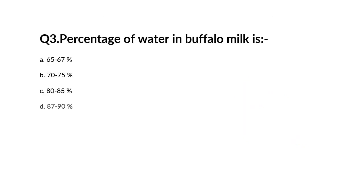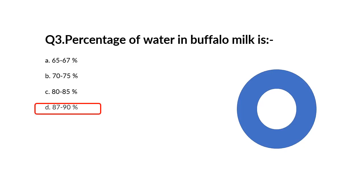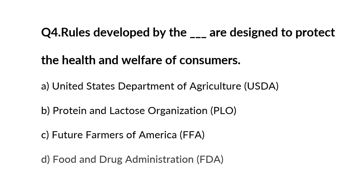Question number 3. Percent of water in buffalo milk is A 65 to 67%, B 70 to 75%, C 80 to 85%, D 87 to 90%. Answer is D 87 to 90%.